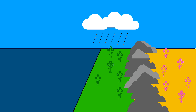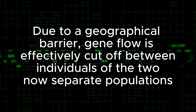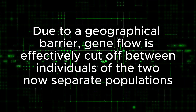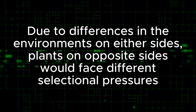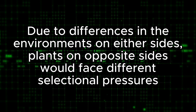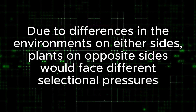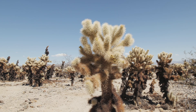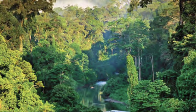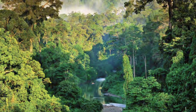With this situation, a couple of things are happening. First, due to the geographical barrier, gene flow is effectively cut off between these two separated populations of plants. Second, due to the differences in the environments on either side of the mountain, these flowers on opposite sides would face different selective pressures. For instance, plants in the arid region may develop deeper roots to access water — an adaptation commonly seen in desert plants — and plants in the wet region may develop traits adapted to an environment abundant in water.